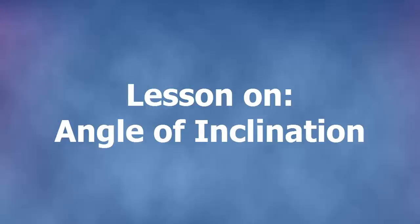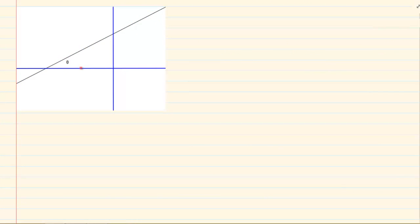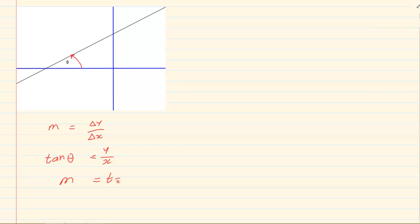Hi and welcome to my maths class. Today we are going to discuss inclination. Inclination is a referral to the angle that the line makes with the x-axis. Now, m is usually equal to the change of y over change of x, and from your trig you know that tan theta is also equal to y over x. Therefore, m is equal to tan theta.